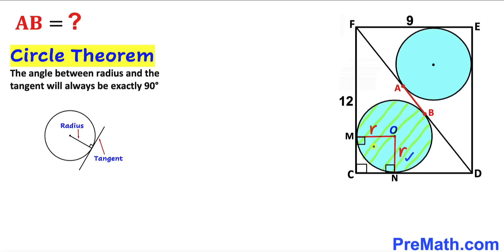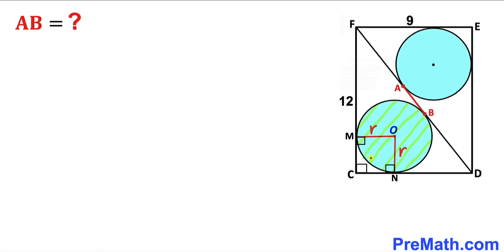ON and OM are the radii, so these angles are each 90 degrees. We also know this angle is 90 degrees since we are dealing with rectangle CDEF. As a result, we get square CNOM, and since it is a square, all side lengths are congruent. So this side length is lowercase r and this side length is lowercase r as well. Since this side of the rectangle is 9, this side length is 9 units.